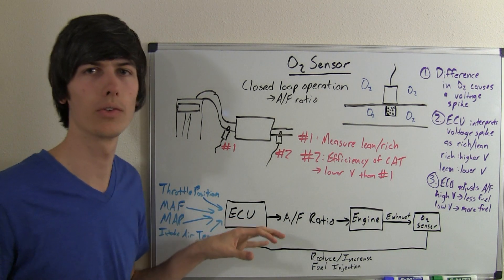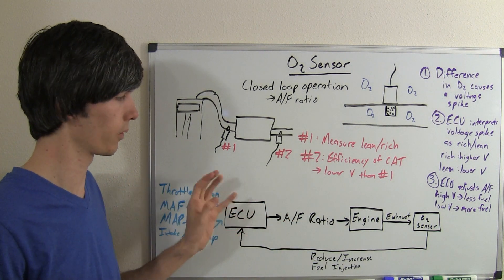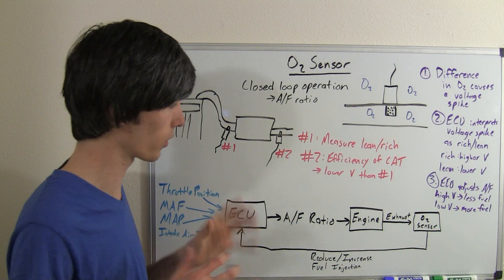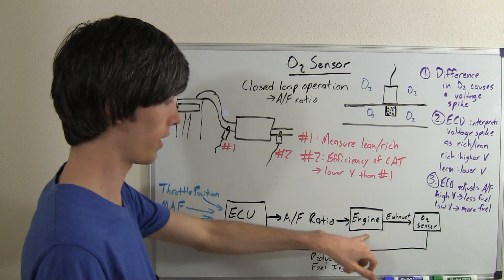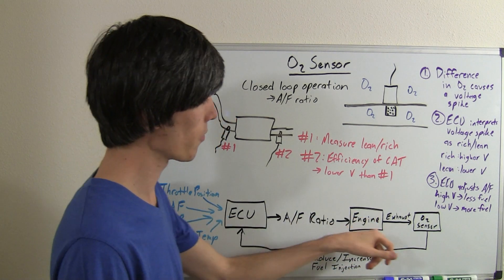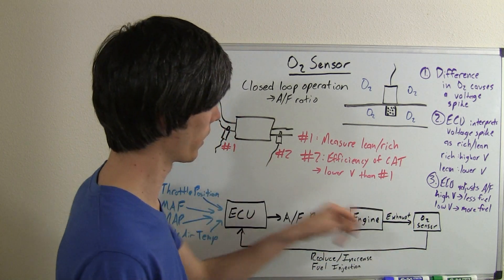Basically the ECU is going to read that information and it's going to come up with the proper air-fuel ratio to use, something around 14.7, that's the ideal number. It's going to send that air-fuel ratio to the engine and then your exhaust is going to go out and it's going to pass.